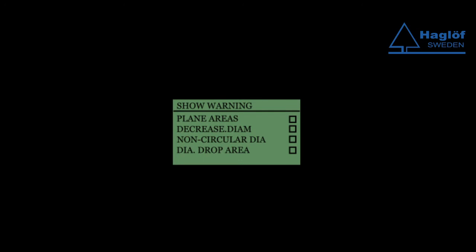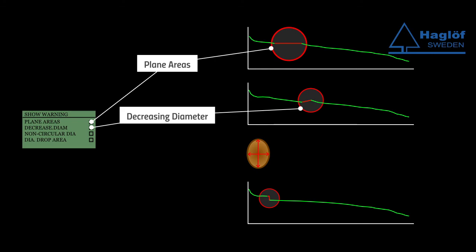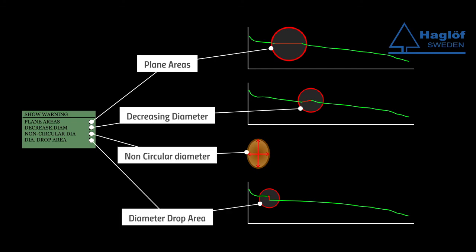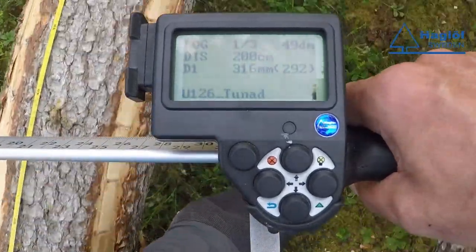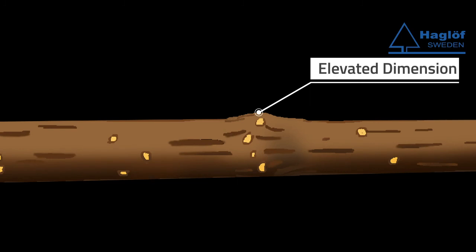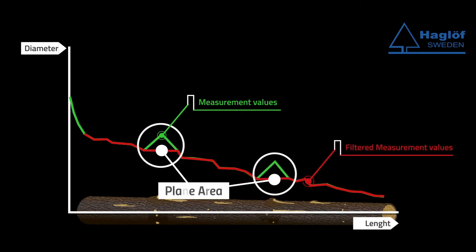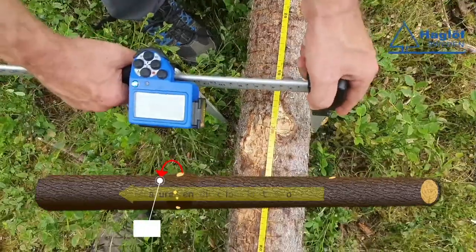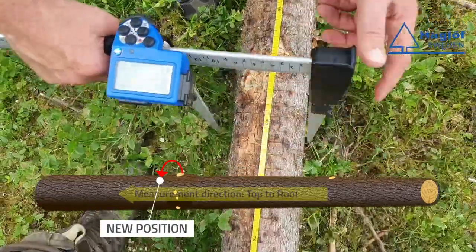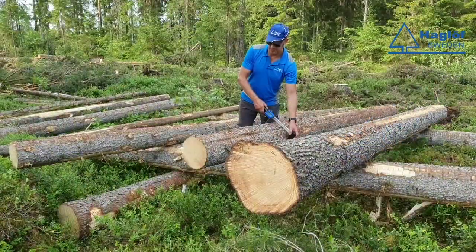The caliper can be set up to display different pre-warning messages that can be of great help for the user, such as machine diameter and plane area, decreasing diameter, non-circular diameter, and diameter drop area. The harvester computer's filtering allows no elevated dimensions in the direction from the root end up to the top, but adjusts the stem profile to a straight line between the point where the stem diameter begins to rise, until the diameter is back to the starting level — this line is called a plane area. If control measurement is done at an elevated point, the harvester computer's filtered measurement values and the control measured value will differ, sometimes markedly. Neither is the top diameter measured at an elevated dimension.